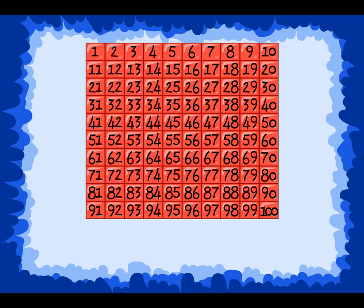Let's look at another 100s chart that will help us skip count by twos. We will skip count every other number. We notice the visual pattern of every other number being counted. Also, the ones place repeats 2, 4, 6, 8, and 0. Let's try counting by twos.